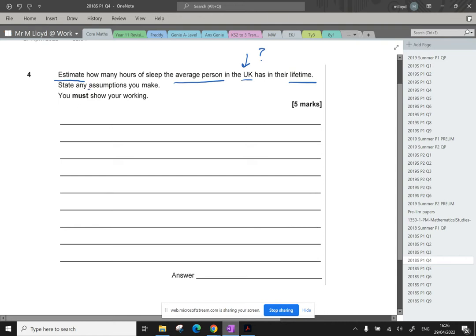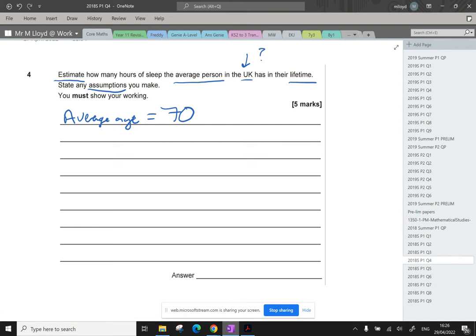So my first assumption is average age, and we'll go with 70. I know that there's tragedies where people are a bit younger when they pass, or some people live to quite a grand age. So 70 is fine.